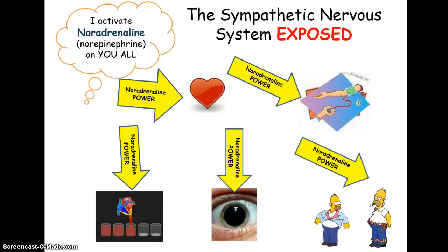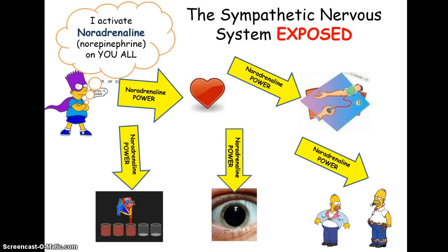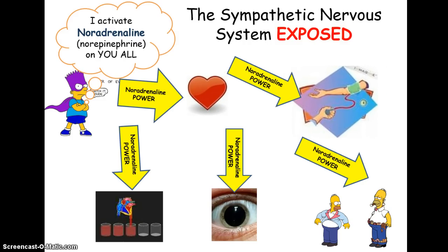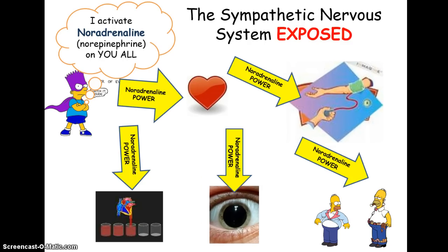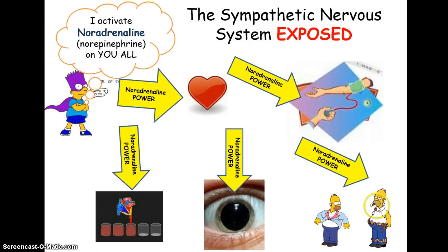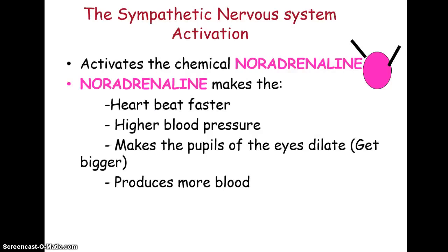So the first thing that happens is, from our brain, a part called the hypothalamus perceives the stressor — for example, the big Rottweiler in front of us. The sympathetic nervous system gets activated straight away, and a chemical called noradrenaline — also called norepinephrine in some places — gets released immediately. Noradrenaline makes our heart start beating faster, we have more blood being pumped around our body at a faster pace, our pupils dilate, and we produce a lot more glucose because of the energy required to either fight or flee.